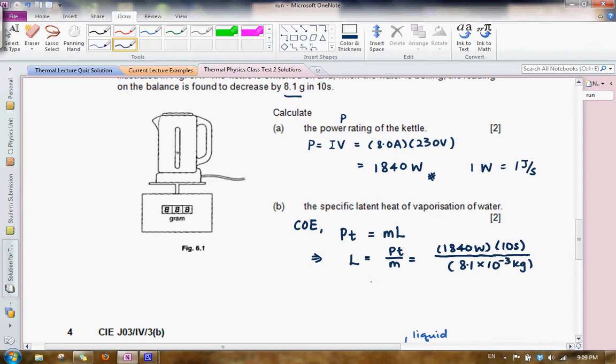So quick check, all the units are in SI units and what we can therefore compute this to be is 2.27 times 10 to the power of 6 joules per kg. The units must be correct for the answer mark to be given.